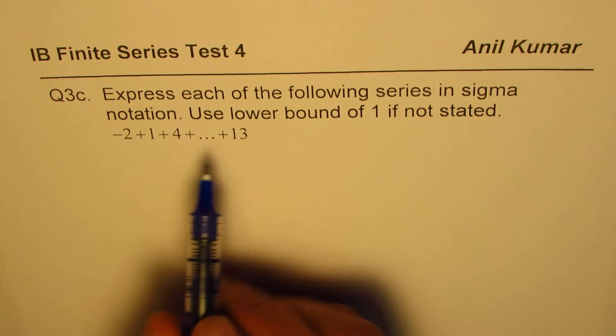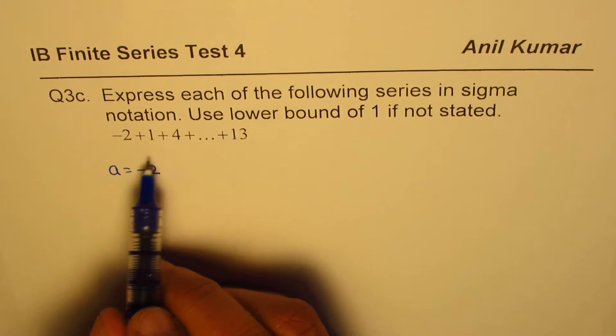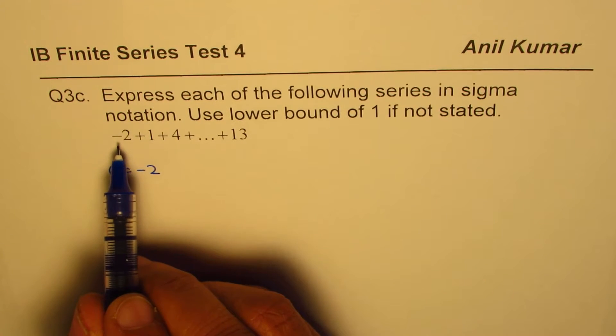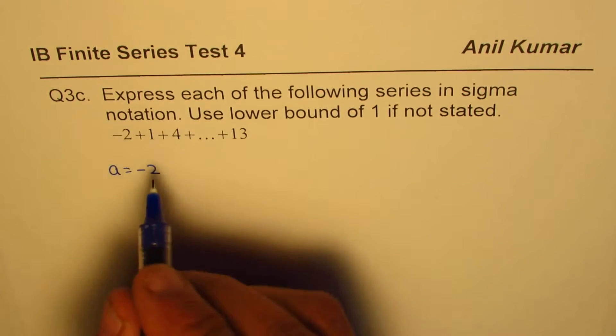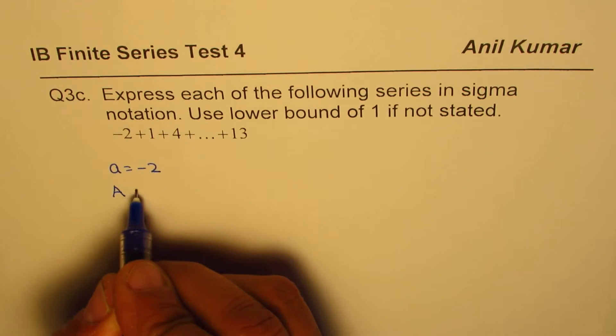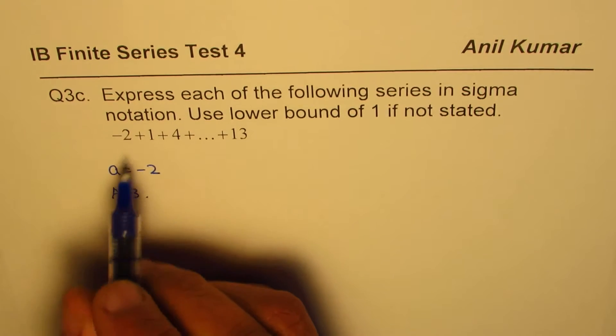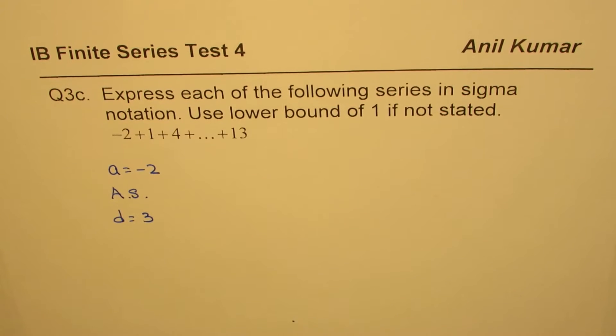Now in this particular series, we know the first term which is equal to -2. Let us analyze the series. What kind of series is it? If I do 1 - (-2), I get 3. 4 - 1 is also 3. So it seems to be an arithmetic series. In this arithmetic series we know that d, the value which is being added all the time, is 3.